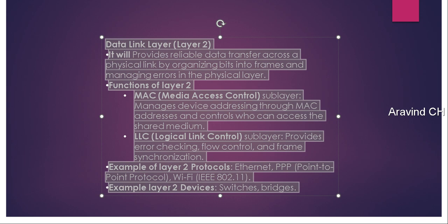Examples of Layer 2 protocols include Ethernet, PPP (Point-to-Point Protocol), Wi-Fi IEEE 802.11. Examples of Layer 2 devices include switches and bridges.